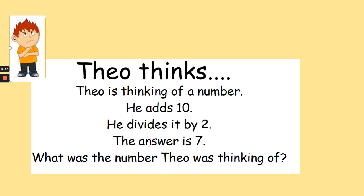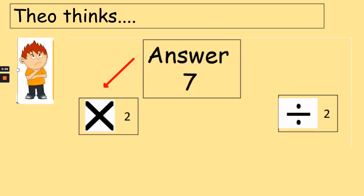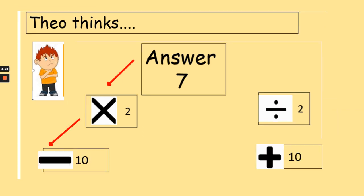Okay, let's see how we work this out. So what we need to do is we work backwards using the inverse. So it said the answer was 7, and how Theo got that answer was he divided by 2. So we're going to use the inverse and multiply by 2. So 7 multiplied by 2 is 14. Then it asked, then Theo had to add 10 to that number. So we are going to use the inverse, and we are going to subtract 10 from that number. So we had 14 take away 10. So the answer was 4. The number Theo was thinking of was 4.